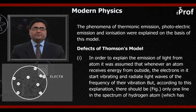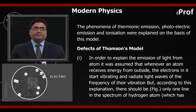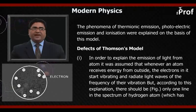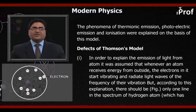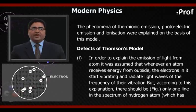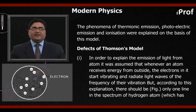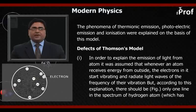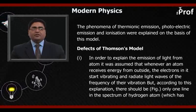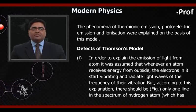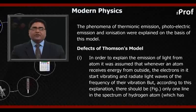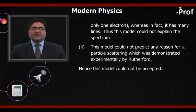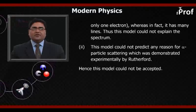In order to explain the emission of light from atoms, it was assumed that whenever an atom receives energy from outside, the electrons in it start vibrating and radiate light waves of the frequency of their vibration. But according to this explanation, there should be only one line in the spectrum of hydrogen atom, which has only one electron, whereas in fact it has many lines. Thus, this model could not explain the spectrum.